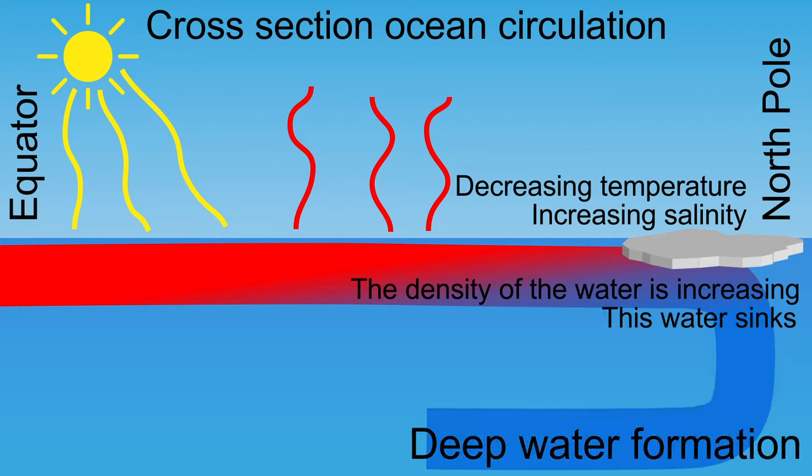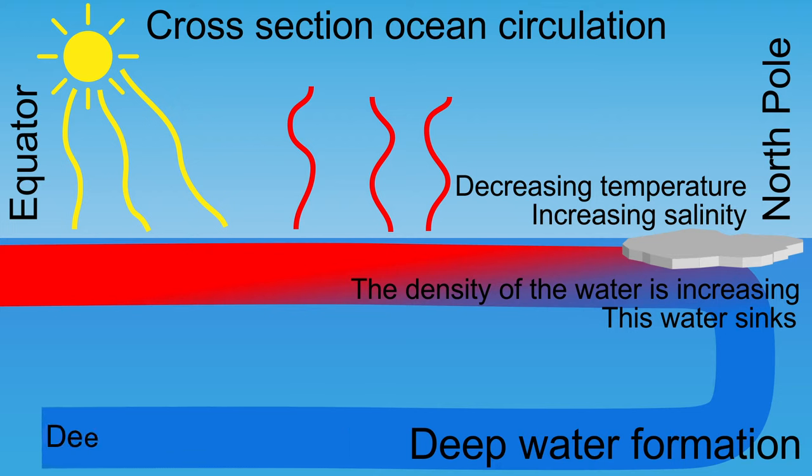Eventually, this water sinks and forms deep water, causing ocean circulation, which is also called the ocean conveyor belt.